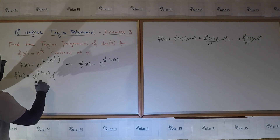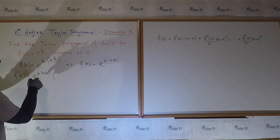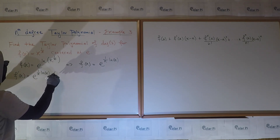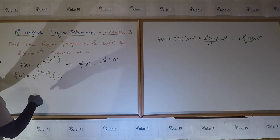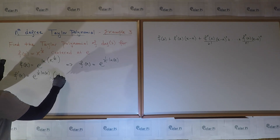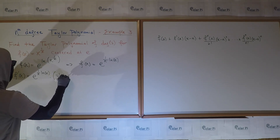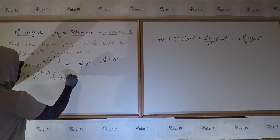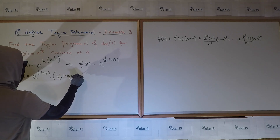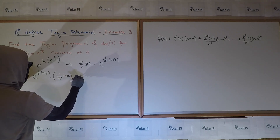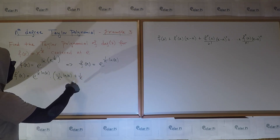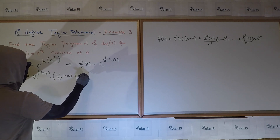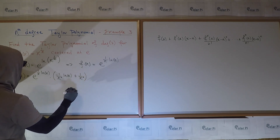Using the product rule: the derivative of 1 over x is negative 1 over x squared, times ln of x, plus 1 over x times the derivative of ln of x, which is 1 over x. So I could just write 1 over x squared right here.